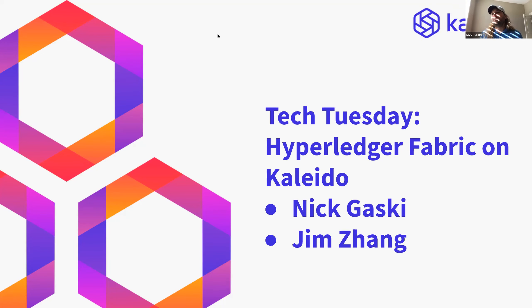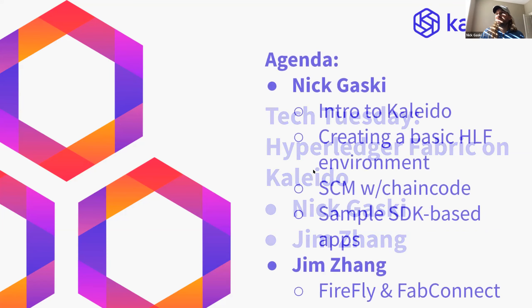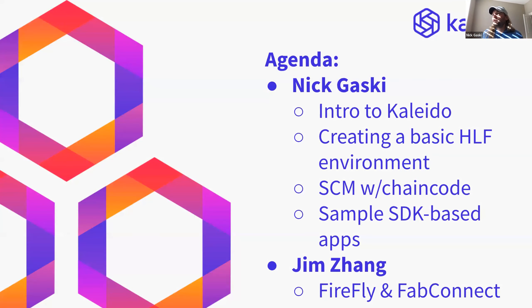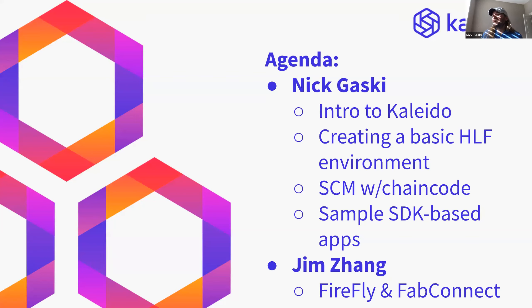Jim has led the vast majority of all of the work around Fabric in Kaleido and also in an open source project, which we'll talk about here. He's a rather prolific contributor to all things Hyperledger Fabric and a former maintainer during his time at IBM. So the agenda for today: I'm going to give you a quick overview of Kaleido, we'll hop into the console and create a Fabric environment, look at some smart contract management with Go-based chain code, sample SDK-based apps — Node.js and Go SDK. Then we'll transition to Jim, who will show FabConnect, a REST API approach to talking to Fabric on Kaleido.